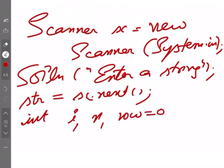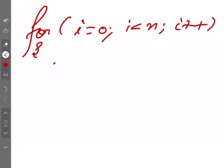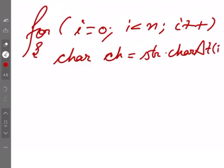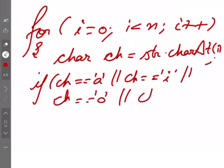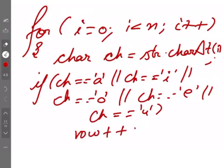Now to count vowels I have int vowel equals 0, int n equals str.length, that is string length, and then a for loop which starts from i=0 to last character and every time i increases by 1. And here I have a character variable char ch which is str.charAt(i). So character at position i will be fetched into ch.